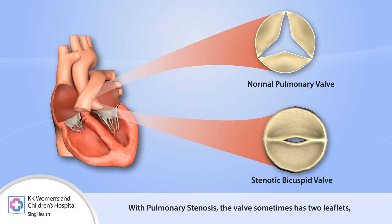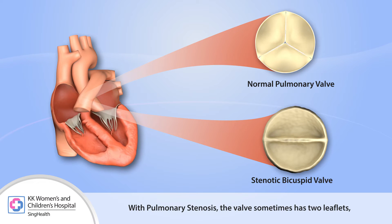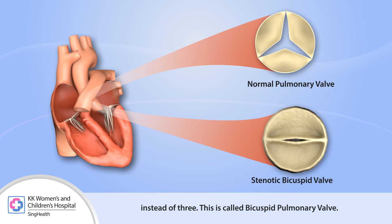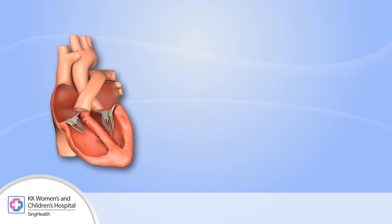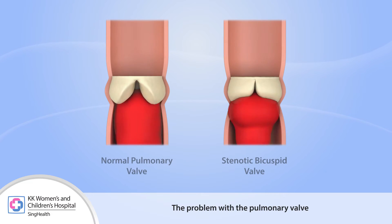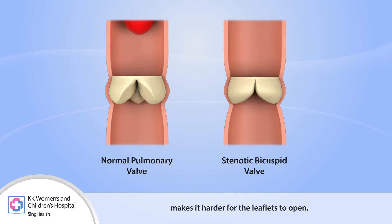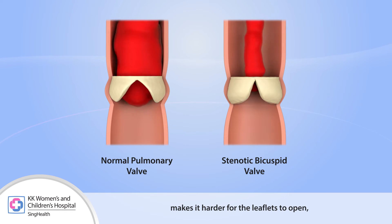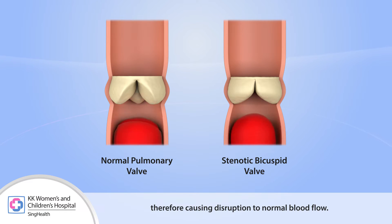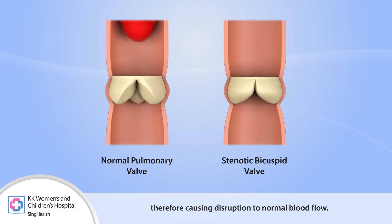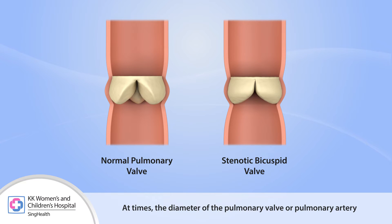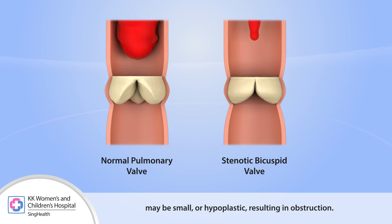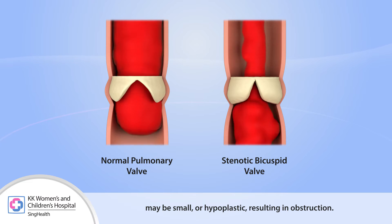With pulmonary stenosis, the valve sometimes has two leaflets instead of three. This is called a bicuspid pulmonary valve. The problem with the pulmonary valve makes it harder for the leaflets to open, therefore causing disruption to normal blood flow. At times, the diameter of the pulmonary valve or pulmonary artery may be small or hypoplastic, resulting in obstruction.